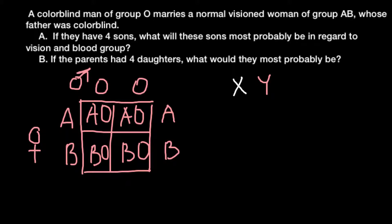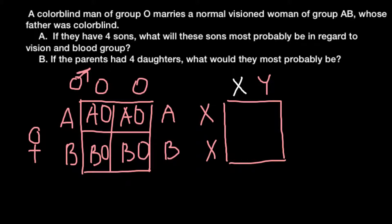So the genotype of the male is X(defective)Y. For the female, we know her vision is normal, but her father was colorblind. Her father's genotype was the same as her husband's — he had an X chromosome with the defective allele for colorblindness. When we build the Punnett square for her family, one normal allele comes from the mother and one defective X chromosome comes from the father.